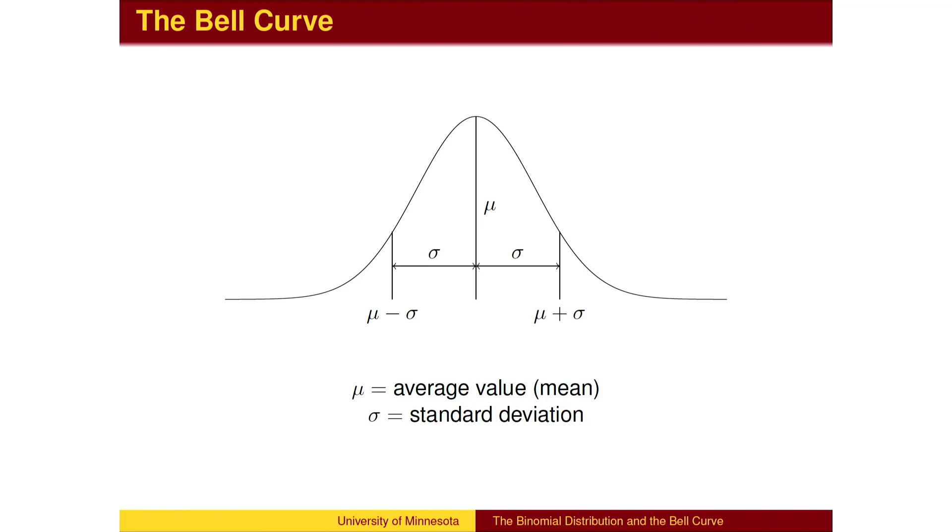The bell curve has several important features, such as the symmetry of the left and right tails, and its shape that has most of the possibilities near the center, with a decreasing likelihood as you move away from the center toward the tails.